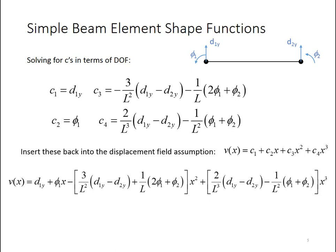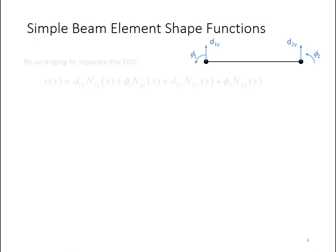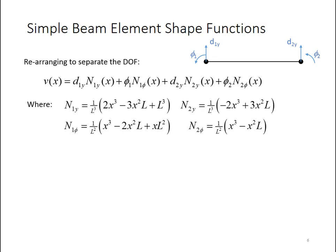Now what I want to do is plug those c values back into my expression for the transverse displacement, v. When I do that, I get this full expression. The next step is going to be to rearrange these terms and to get each individual degree of freedom multiplied by some function. So I'm going to have a function that I'll call n1y multiplied by d1y and so on. Our goal is to rearrange those terms so that I have each degree of freedom multiplied by some function. That function, or that group of functions, are going to be my shape functions for this element.